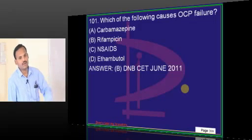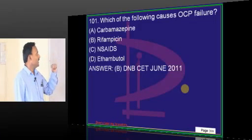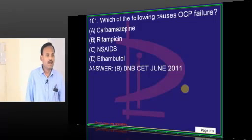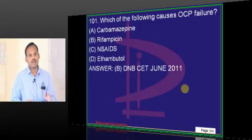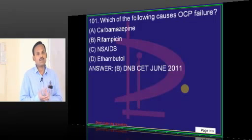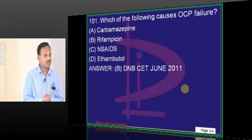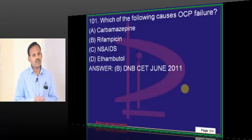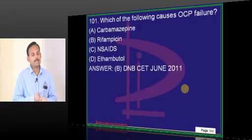If this question is asked differently — if I give NSAID, ethambutol, pyrazinamide, and ampicillin and ask which causes failure of contraception — pyrazinamide is neither an inducer nor inhibitor, ethambutol neither, NSAID neither. But ampicillin will cause failure of contraception because ampicillin has the ability to alter the gut flora.